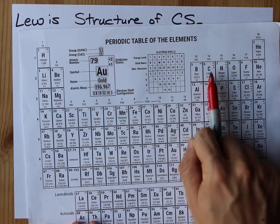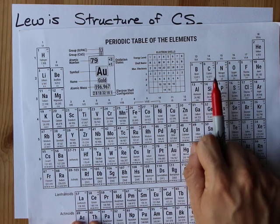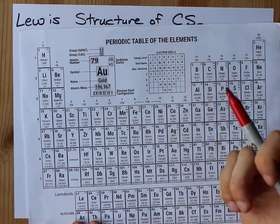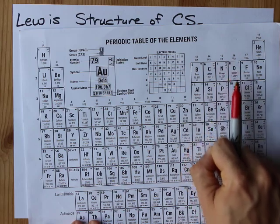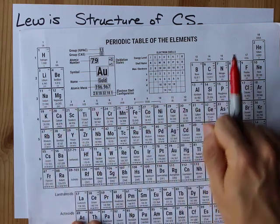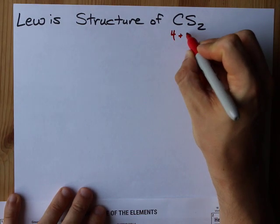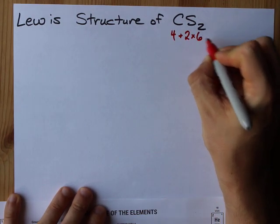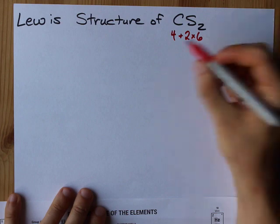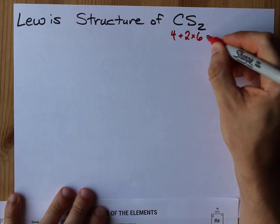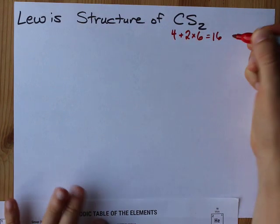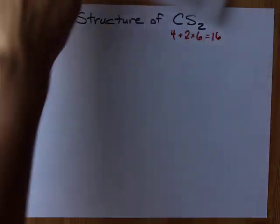Carbon brings four valence electrons because it is in group 14. Sulfur brings six valence electrons each because it's in group 16. Let's write that down. This carbon brings four and each sulfur brings six. I have to double the six to make 12, and the extra four gives me 16 valence electrons to deal with here.